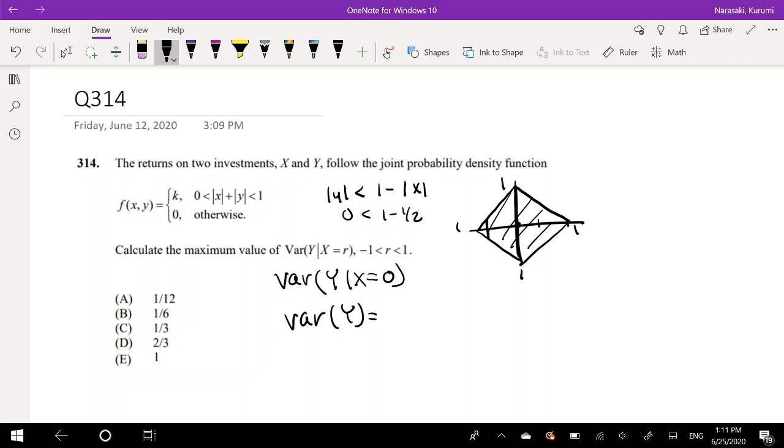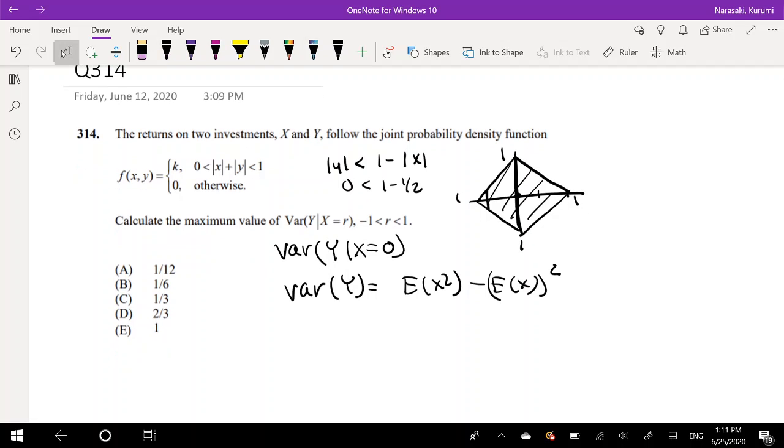So what is the variance of y? Well, we can always use that formula, you know, E of x squared minus E of x, the whole thing squared, and integrate it from like negative 1 to 1 and such. But if you haven't seen my uniform distribution function, we actually proved this variance of y for uniform distribution to be b minus a over 12, the whole thing squared.